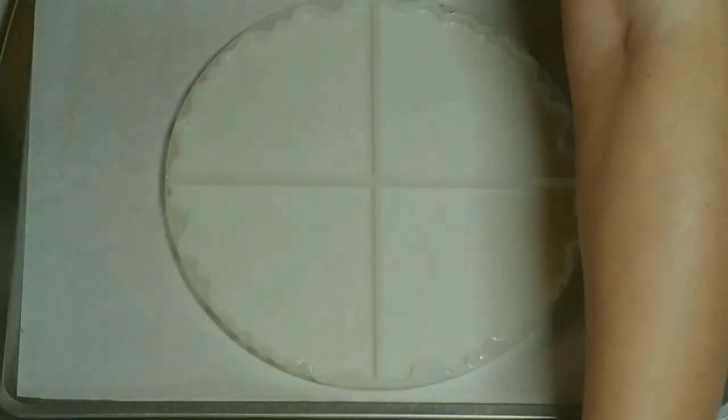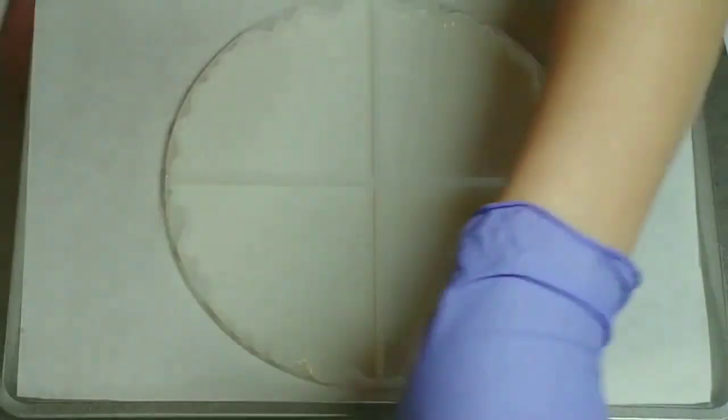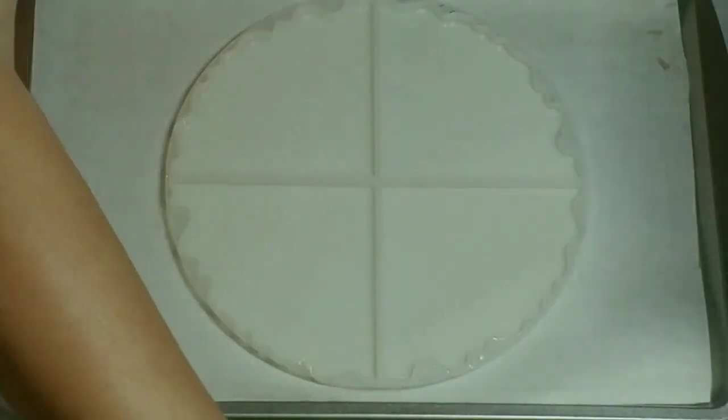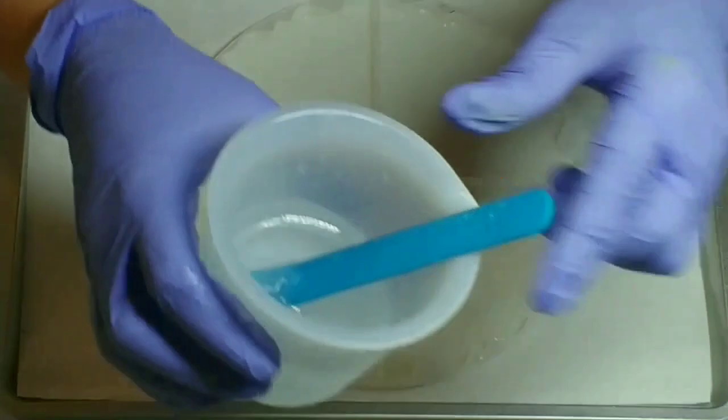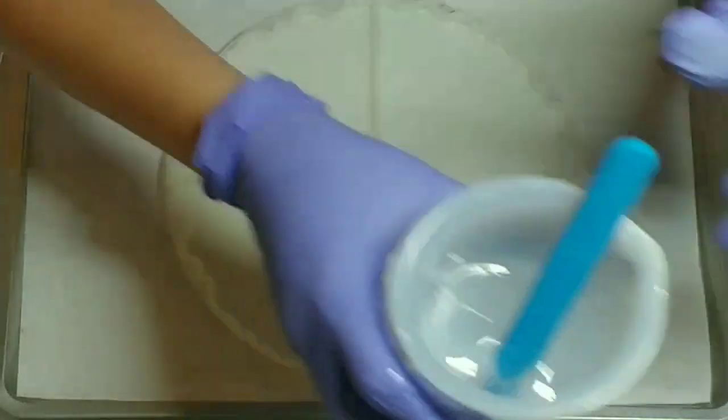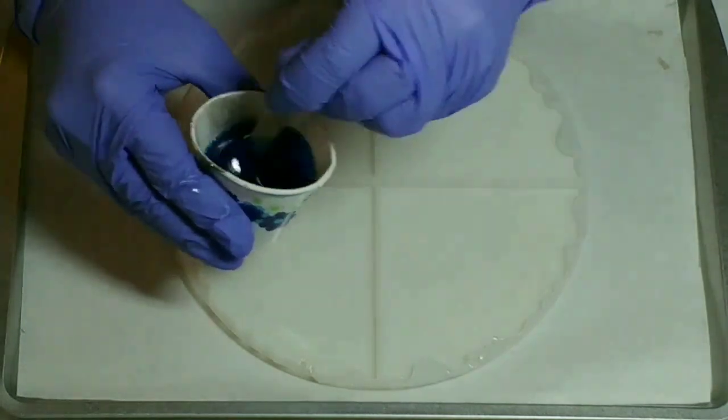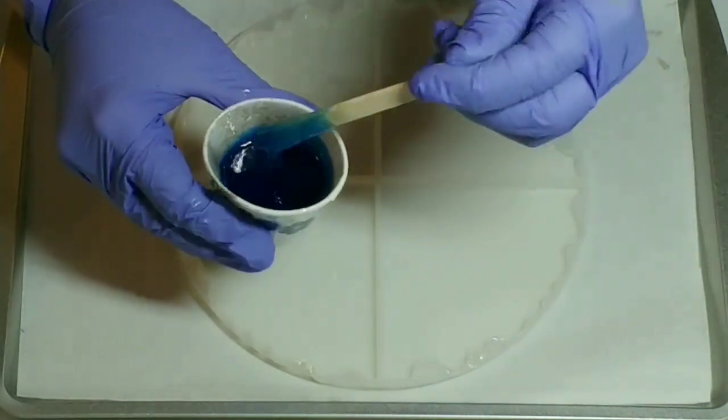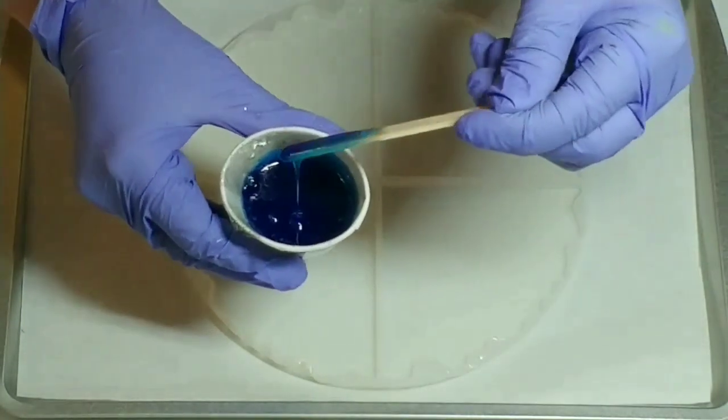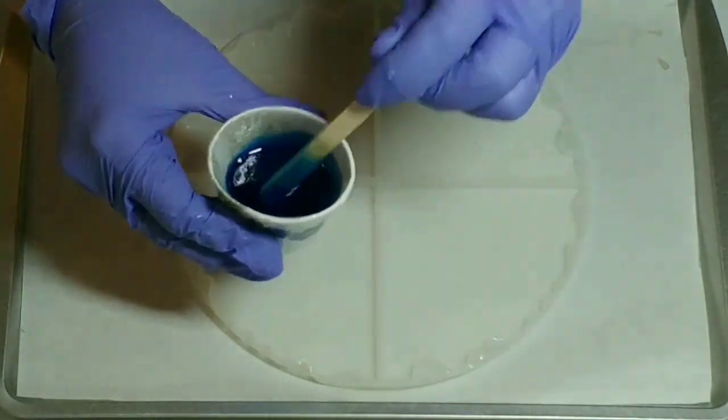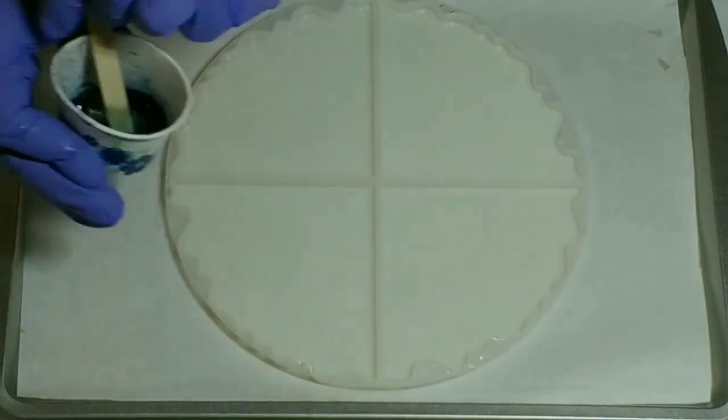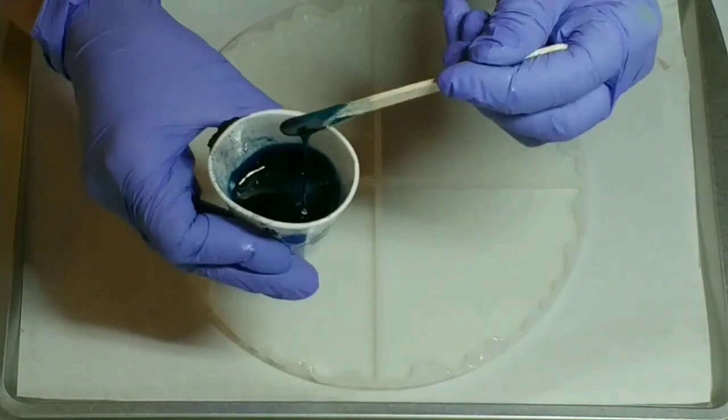Of course, we have resin ready to go for this coaster mold. I've used 200 mil, and this is the Testors Metallic Blue enamel paint mixed up,